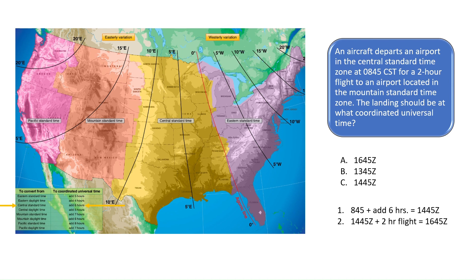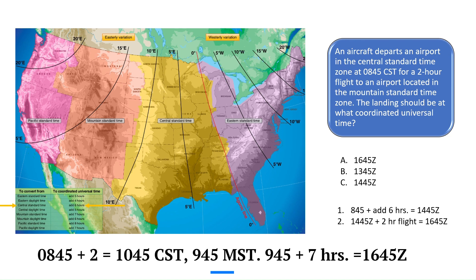Another way to solve this problem: add two hours to the departure time of 8:45, giving an arrival of 10:45 central standard time. Since mountain standard time is one hour behind central standard time, the flight would arrive at 9:45 mountain standard time. Then add seven hours to 9:45 to get the arrival time of 16:45 Zulu.